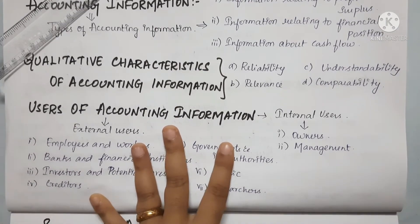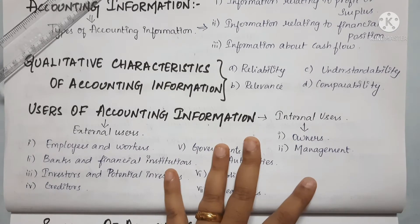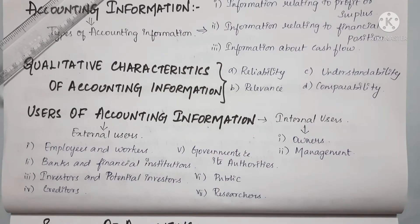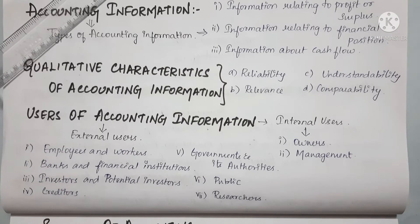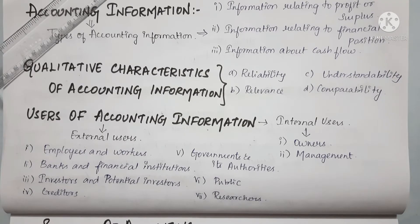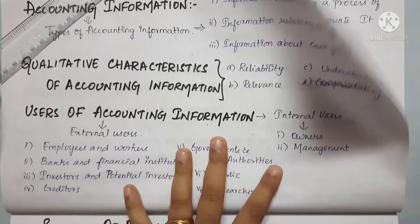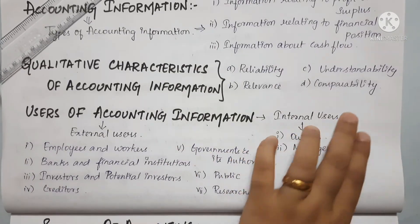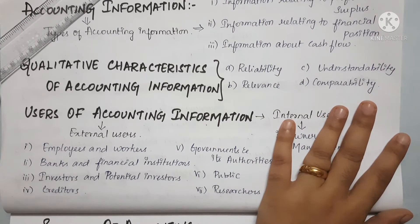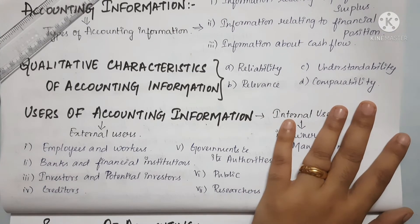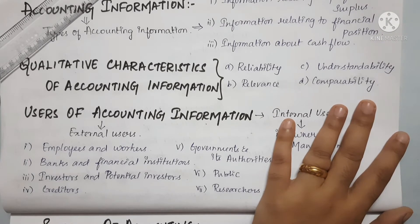Next is information related to financial position. The financial position is represented by a balance sheet. In the balance sheet, there is information about owner's equities, assets, payable, and receivable amounts.